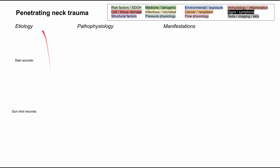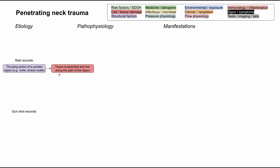If you've already seen the penetrating chest and abdominal trauma videos, this will look familiar in the beginning. You can have penetration injury from a stab wound or from a gunshot wound. From a stab wound, you have the thrusting action of a pointed object, like a knife or a broken bottle. This lacerates and tears the tissue along the path of the object, and the depth of injury is usually greater than the width of the injury.